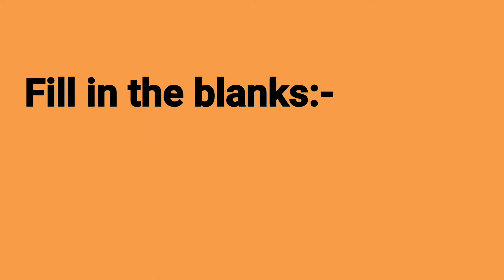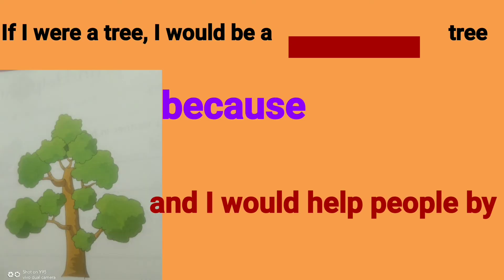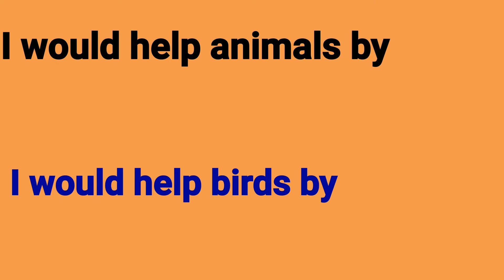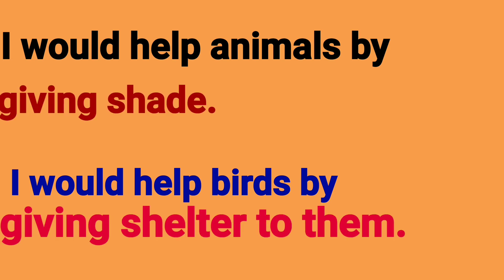Children, take your 'Little Thinker English' and open page number 42, Activity 10.2. We will do this activity now. We will read fill in the blanks. If I were a tree, I would be a dash tree. I would be a mango tree because I like mangoes very much, and I would help people by giving fruits. I would help animals by giving shade. I would help birds by giving shelter to them.